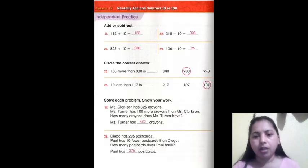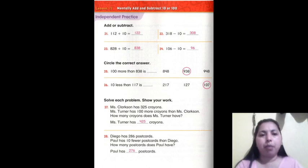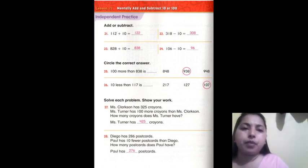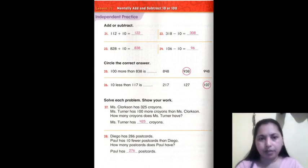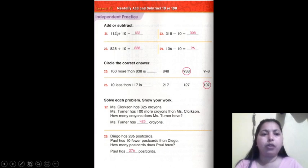On this page, this is the independent practice. Number one is add or subtract. 112 plus 10 equals 122. Number two is 318 minus 10 equals 308.